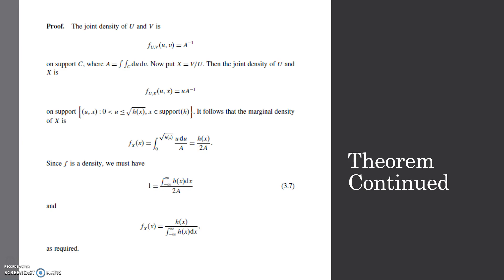Here is that proof continued. It starts with the joint density of u and v. It displays that as a to the negative one on support of c, where a is the double integration of c on support of c of du, dv. Then you put in the x equals v, u part of it. You get that the joint density of u and x is this statement, and it's on support of c. Then it follows that the marginal density of x is h of x over 2a. Since f is a density, we must have 1 equaling to that. When you rearrange and solve for that, you see that f sub x of f of x is equal to h of x over the integration of negative infinity to infinity of h of x.